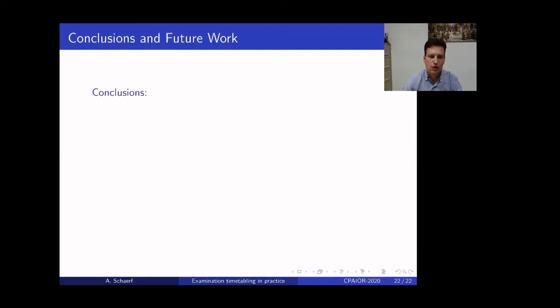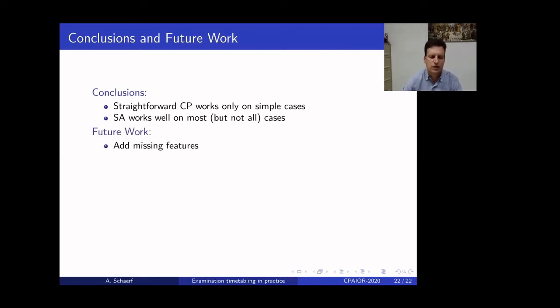So, let's go to the conclusions. So, first of all, we can see that the straightforward CP does not work. It works only in very simple cases, so there is room for improvement. Simulated annealing works well in most cases, but definitely not all of them. Okay, so we have seen two cases in which there are clues that we can improve. So, how do we plan to improve? Obviously, first of all, we want to add the missing features because we want to build a full commercial software that could be used in practice by the universities, so we really want to have the features to be able to solve as many universities as possible.